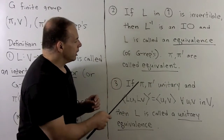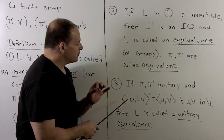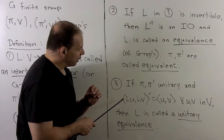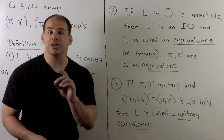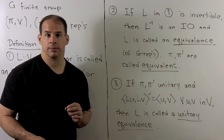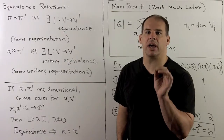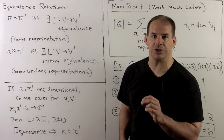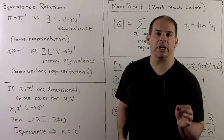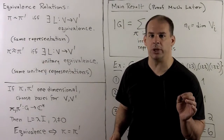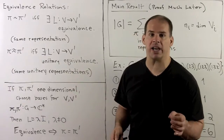Further, if our representations pi and pi prime are unitary, and if L preserves the inner products — we have an inner product on V prime and an inner product on V — then we call L a unitary equivalence. Formally, we can use our definitions to set up equivalence relations and equivalence classes of representations. For instance, pi and pi prime are related if and only if there exists an equivalence between them. I'll leave it to you to show this relation is reflexive, symmetric, and transitive.